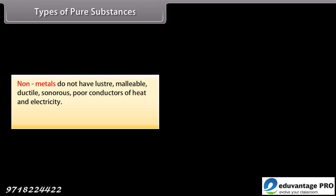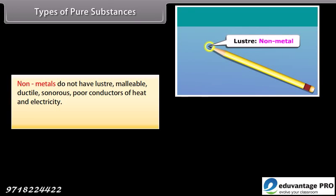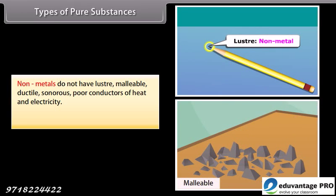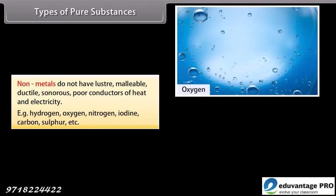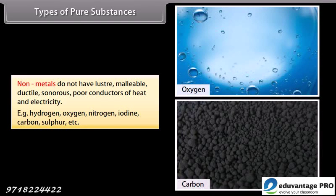Non-metals do not have lustre, malleability, ductility, or are sonorous. They are poor conductors of heat and electricity. For example, hydrogen, oxygen, nitrogen, iodine, carbon, sulphur, etc.